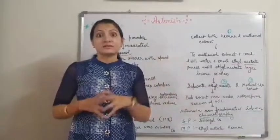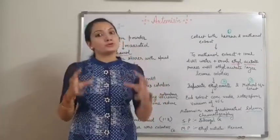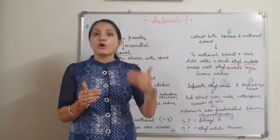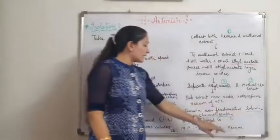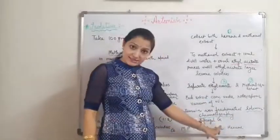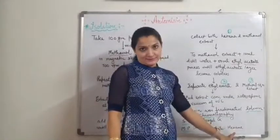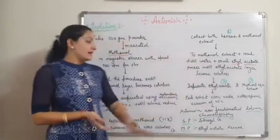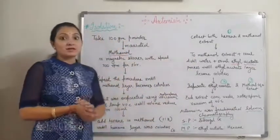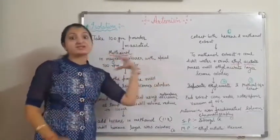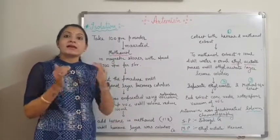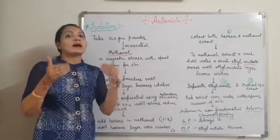We take these three extracts, concentrate them, and reduce their quantity under rotary evaporator vacuum at 40 degrees Celsius. They are then subjected to column chromatographic method to isolate Artemisinin. In column chromatography, the stationary phase is silica gel G and the mobile phase is ethyl acetate and hexane. By column chromatography, we fractionate and isolate Artemisinin from the three extracts.